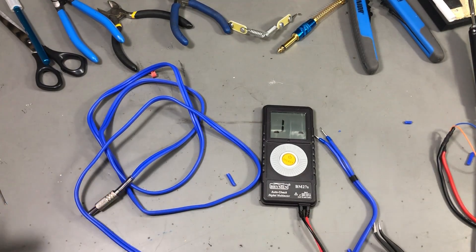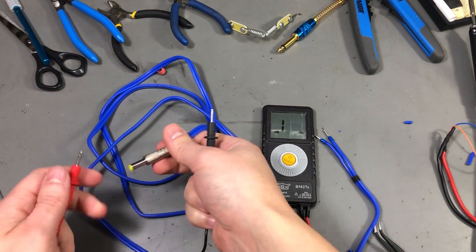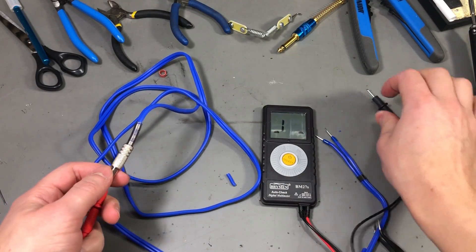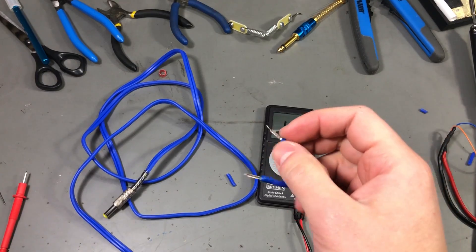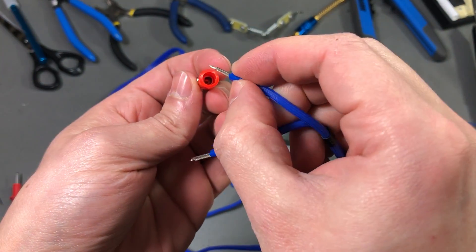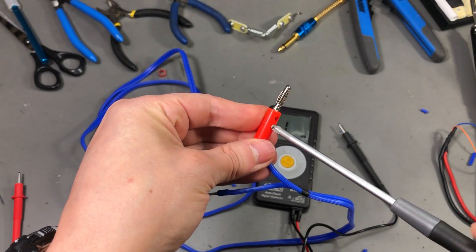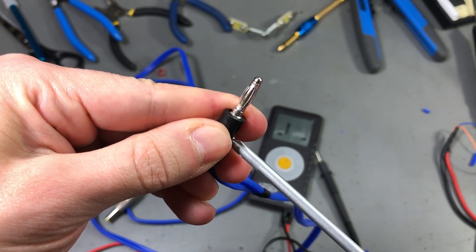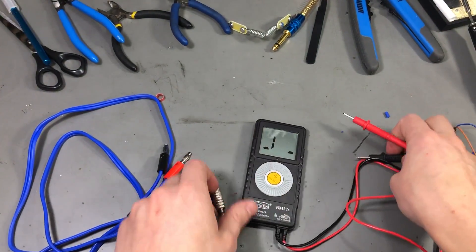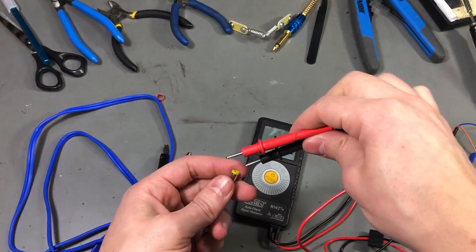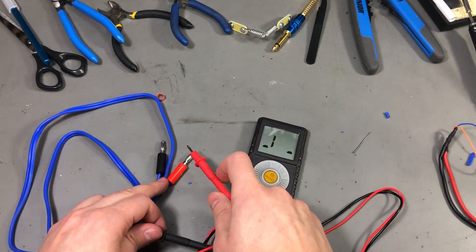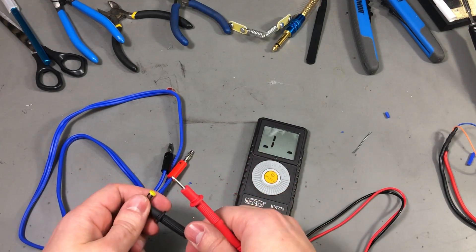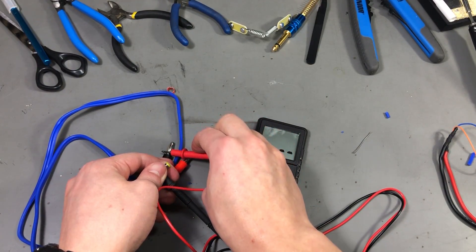Let's check which one is our center positive because the TS100 has a center positive connection. So it looks like it's this one, so this will be connecting to the red banana plug. Before we continue let's check our polarity again. This should be positive, yep, there should be no short to negative and this should be our negative. Yep, that's pretty good.